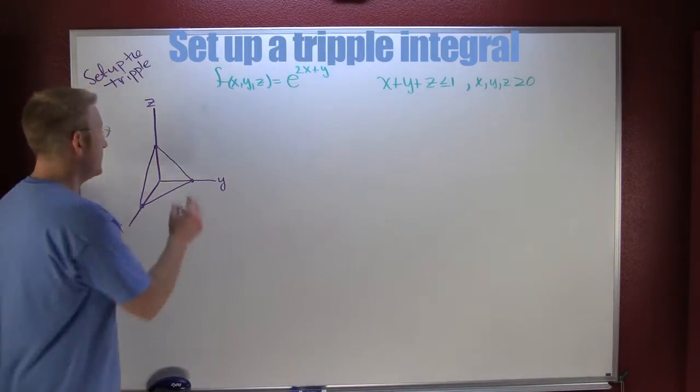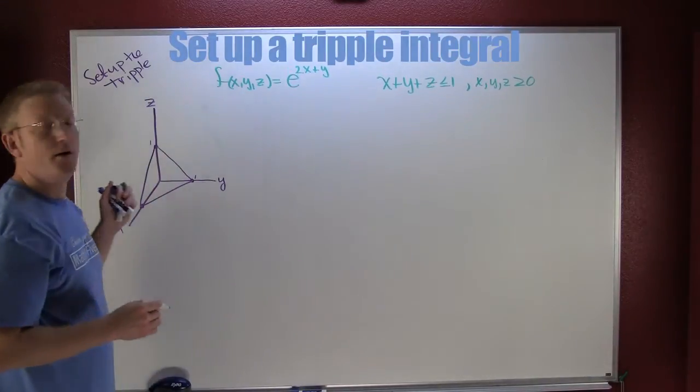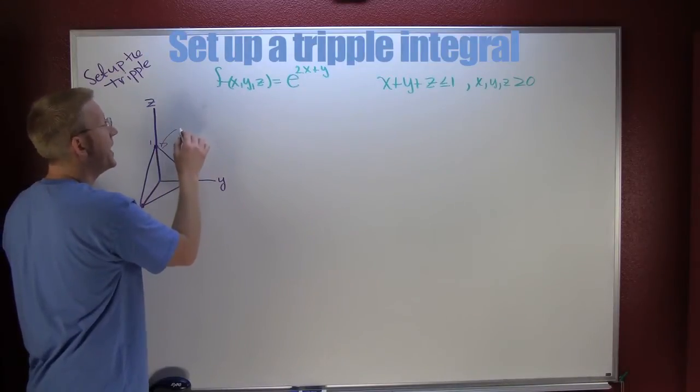So it appears that I have a plane leaning up against the XY axis with this being 1 and 1 and 1.